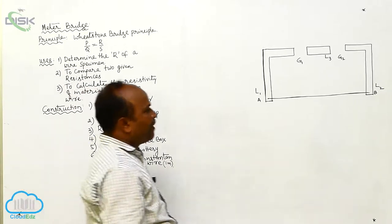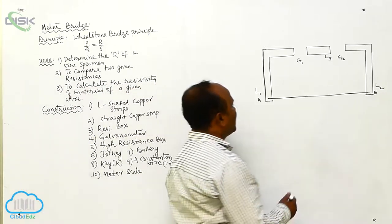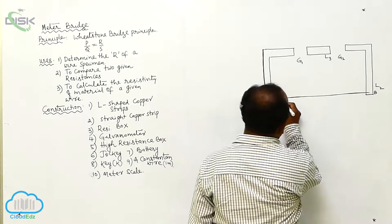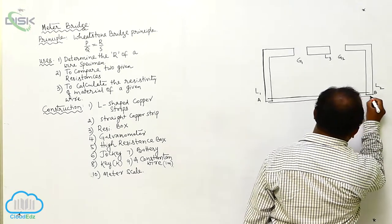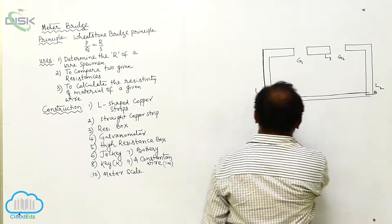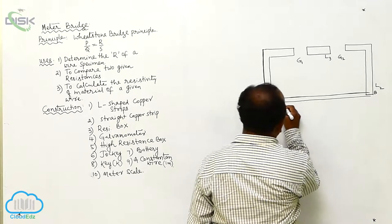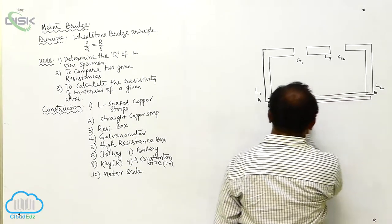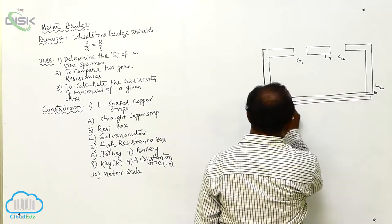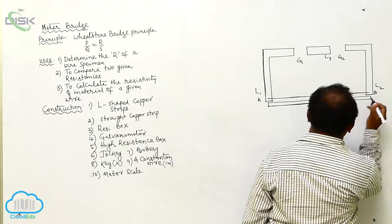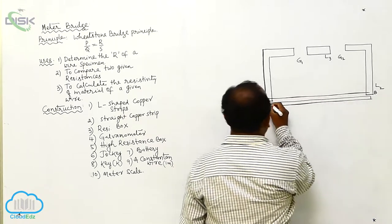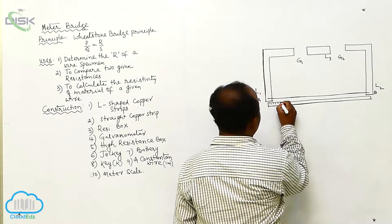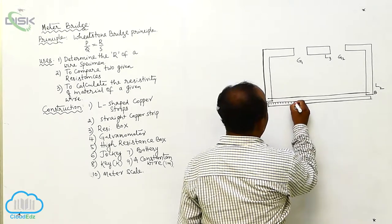That's why we are using a constantan wire. Parallel to the constantan wire, a meter scale is also kept. The meter scale divisions go from 0 to 100 centimeters.